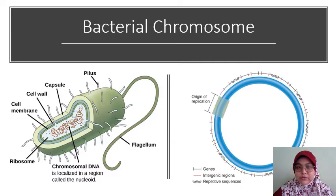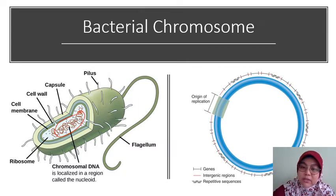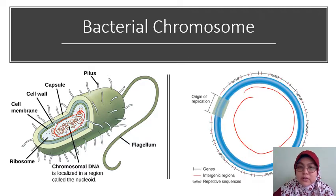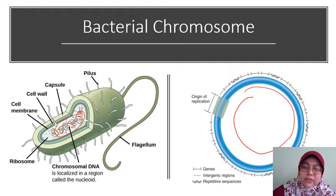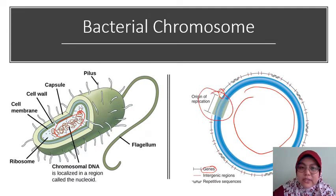Next up, the bacterial chromosome. The bacterial chromosome is found within a region of the bacterial cell called the nucleoid. There can be one to four copies of chromosomes per cell. Bacterial chromosomes are circular, a few million nucleotides in length. There are a few different gene types: structural gene sequences, which are the majority; intergenic regions that are non-transcribed; and also repetitive sequences. The bacterial chromosome has one origin of replication.